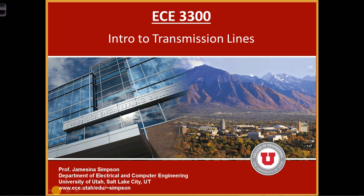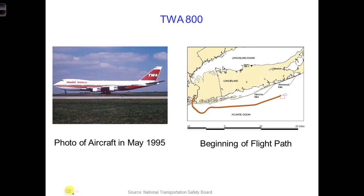Turn to the first page of your notebook because in a few minutes you'll be adding some notes to it. In the evening of July 17th, 1996, flights were taking off from John F. Kennedy International Airport as usual. One of these flights was TWA 800 on its way to Rome, Italy with a stopover in Paris. On board were 230 people.